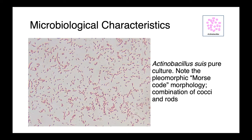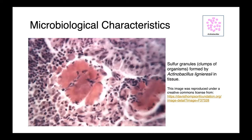In this image, you can see a pure culture of Actinobacillus suus, and what's really characteristic of this organism is the Morse code morphology — the dots and dashes — with coccoid organisms and rods all within the same pure culture. In this other image, you can see a sulfur granule, which is formed by clumps of organisms and is really characteristic of Actinobacillus lignieresii infections, which causes wooden tongue in cattle. Here I've outlined two of these sulfur granules — these large agglomerations of cells which stand out quite nicely cytologically.